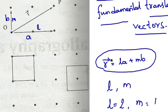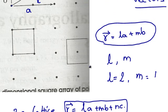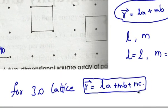For three dimensional lattice points, the translational vectors can be represented as R bar is equal to L A plus M B plus N C. Now that we know what is the translational vectors, let us study about lattice parameters.